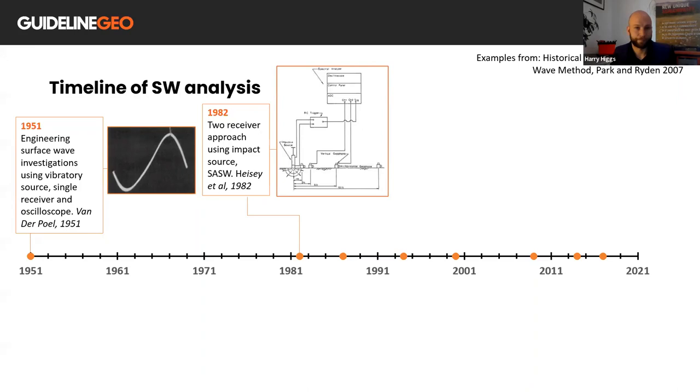And in 1987, a 24-channel acquisition system was used to image higher modes. The 1980s were really the infancy of multi-channel measurements.